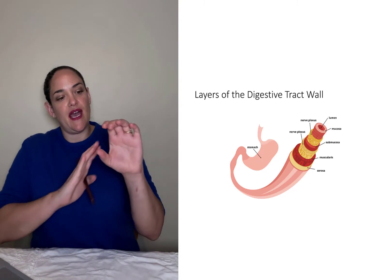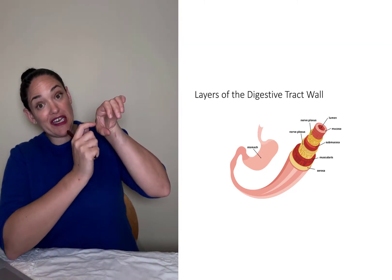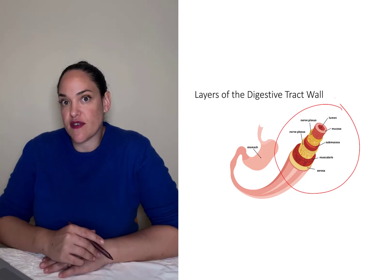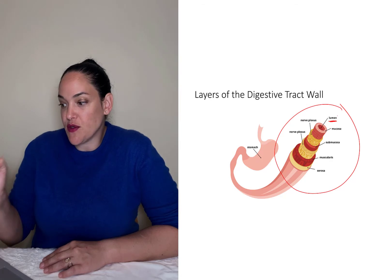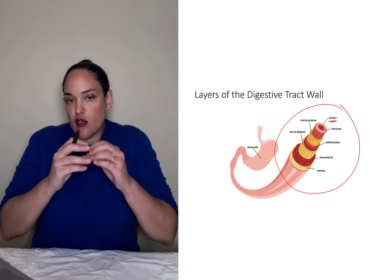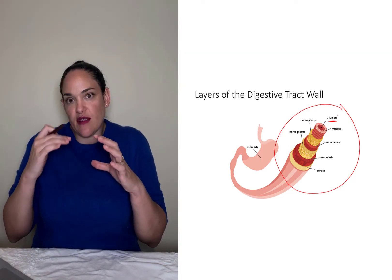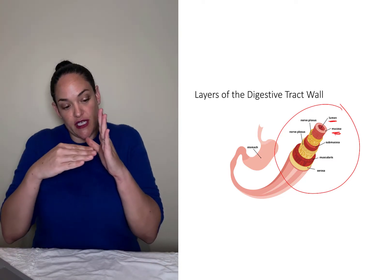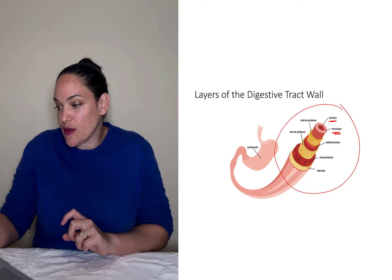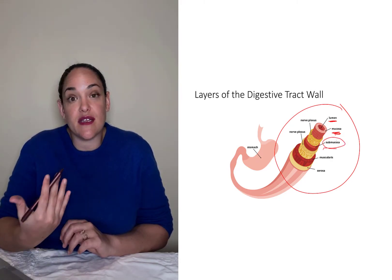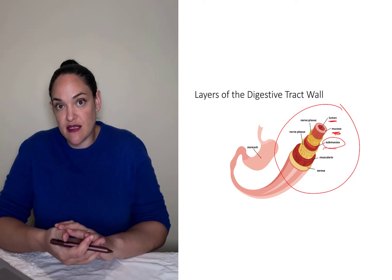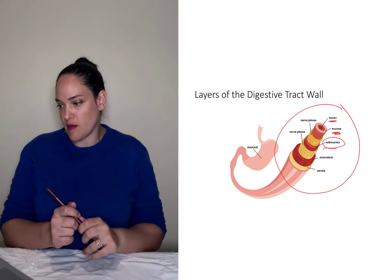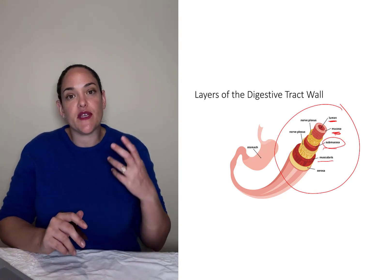The digestive tract is one big long tube, and if you were to cut it and look at a cross-section under a microscope you would see different layers. This slide shows the various layers of the digestive tract that all face into the center space — the lumen — where digestive processes occur. The first layer facing the lumen is the mucosa, where nutrients are absorbed. Next is the submucosa, where blood vessels and lymphatic vessels are found, and during absorption in the small intestine nutrients enter those vessels to travel around the body.